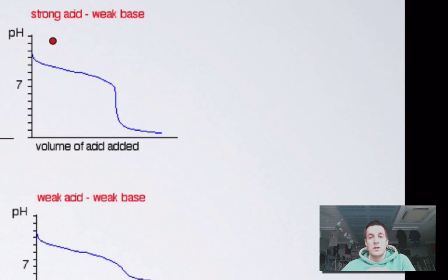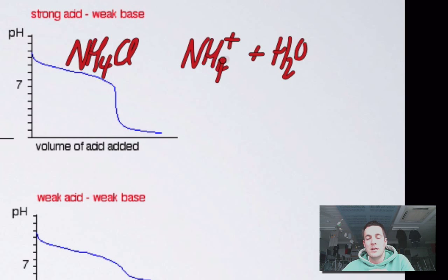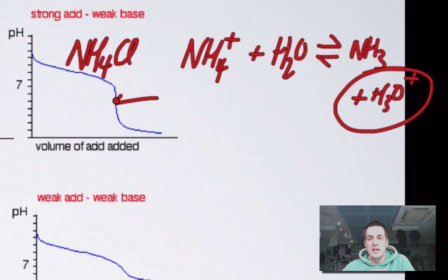If I use a weak base with a strong acid — say ammonia with hydrochloric acid — then I'm going to make ammonium chloride as my salt at equivalence. Ammonium chloride in water will react with the water because the ammonium ion is the conjugate acid of a weak base, so we'll produce some ammonia and some H₃O⁺. This will make my solution acidic, so the pH at equivalence is less than 7. I want an indicator that changes colour at less than 7 — so methyl orange would be great, but phenolphthalein would be a poor choice.